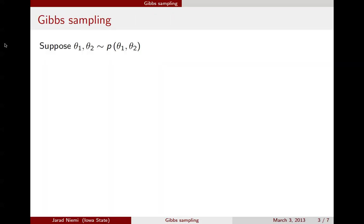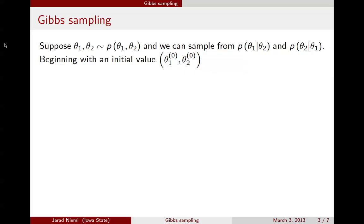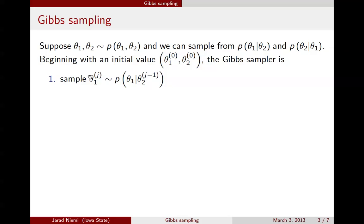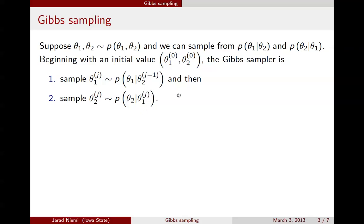We have the same setup: a joint distribution for theta1 and theta2, and we can sample from their two conditional distributions. We're going to start with initial values for theta1 and theta2 with superscript 0. The Gibbs sampler says: at iteration j, draw from the conditional distribution for theta1, conditional on the previous value for theta2. Then turn around and sample a value for theta2 from the full conditional distribution for theta2 given theta1 that you just drew. And this is the Gibbs sampler.